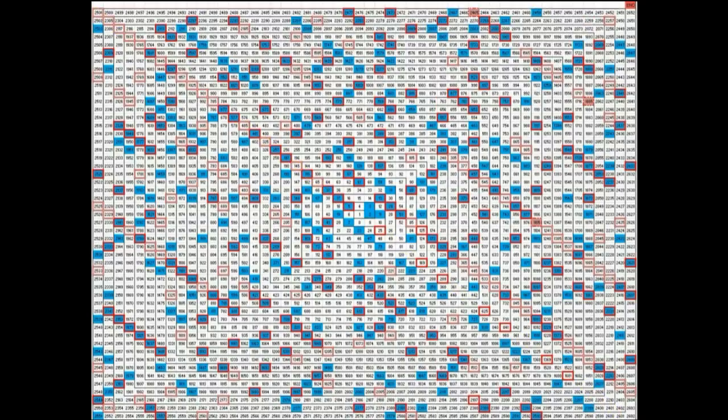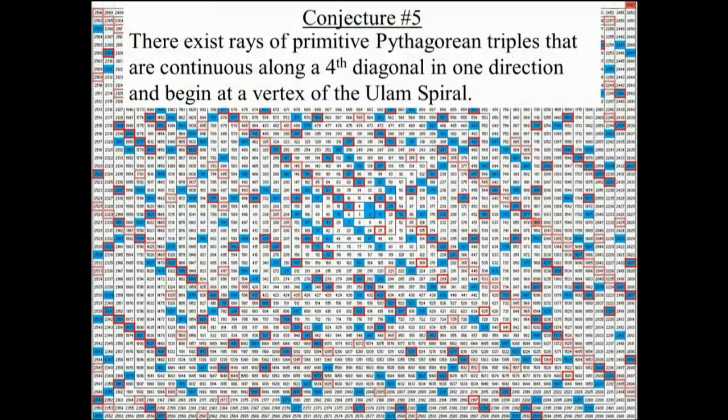The last conjecture is probably going to be the hardest to prove. There exist rays of primitive Pythagorean triples that are continuous, with no gaps, along a fourth diagonal in one direction and begin at a vertex. You see one here, it's completely filled with Pythagorean triples. And one going off in the opposite direction. And then there's another one here, and another one here. They all begin at vertices of the spiral. In other words, the corners of the spiral is where they start. But isn't that bizarre? And how are you going to prove that those are continuous and go on forever? I'm only looking at a small portion of it here. But that's what a conjecture is, it's something that we think is true, and you need to prove it true.